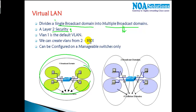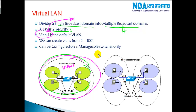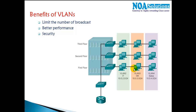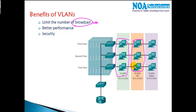By default there is only one VLAN called VLAN 1, which means only one broadcast domain. If we want, we can create multiple broadcast domains — the range is from 2 to 1001. This can only be done on manageable switches. Using Cisco manageable switches, you get into the command line to create and verify VLANs. The major benefit is minimizing the number of broadcasts so that departments in different VLANs don't generate unnecessary broadcasts across the network.